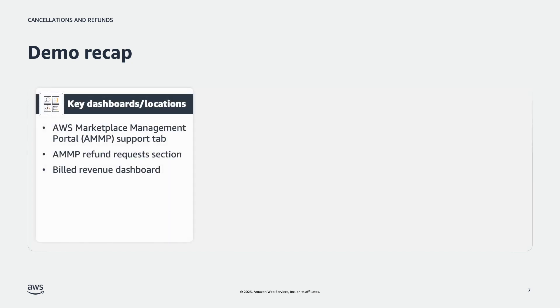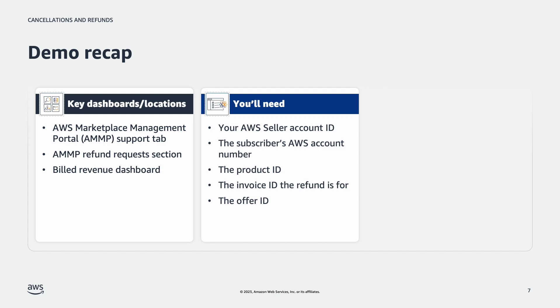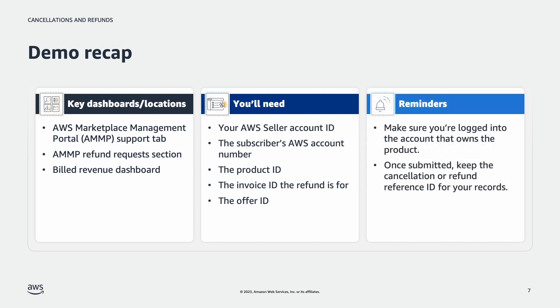Let's do a quick recap of what we covered for submitting a refund and cancellation request. To successfully submit a cancellation or refund request as a seller, you will need access to the support tab under AWS Marketplace Management Portal or AMP, the build revenue dashboard under insights tab on AMP, and the AWS support console to receive updates from AWS customer service. You will also need your AWS seller account ID, the subscriber's AWS account number, the product ID, the invoice and billing period the refund is for, and the offer ID. Make sure you are logged into the account that owns the product the refund or cancellation is for, and once submitted, please keep the reference ID for your records.